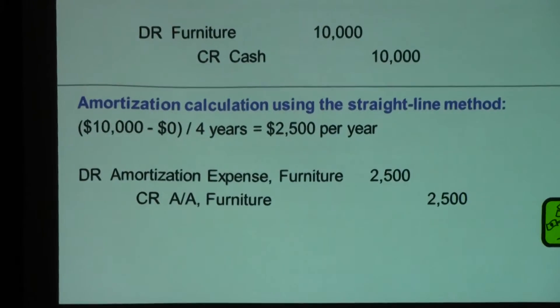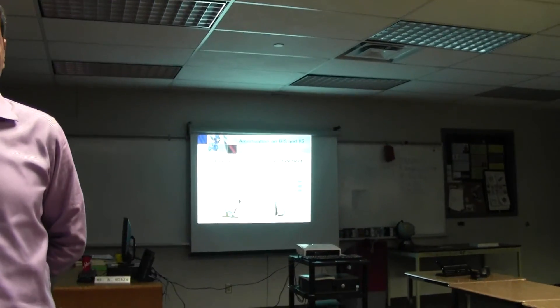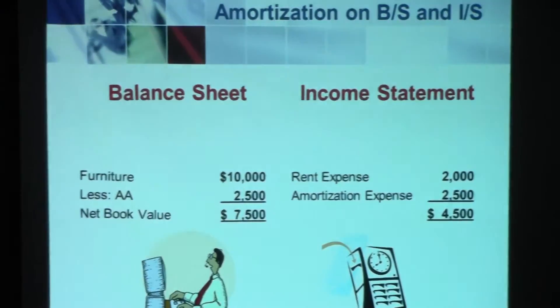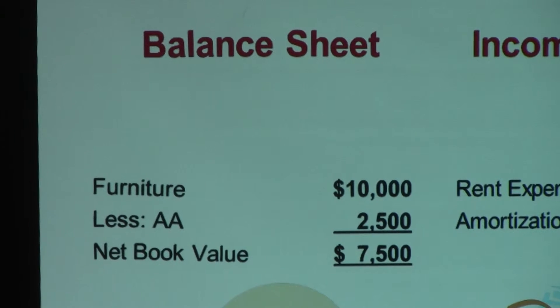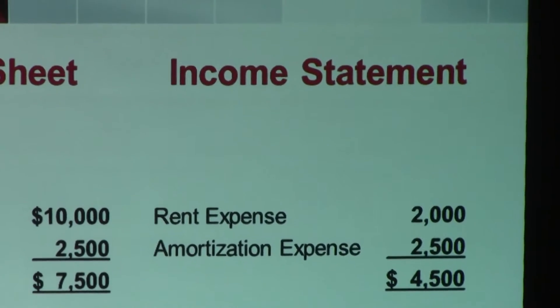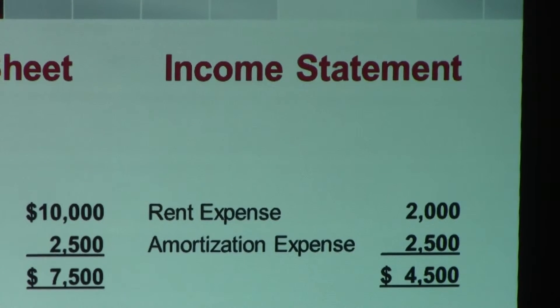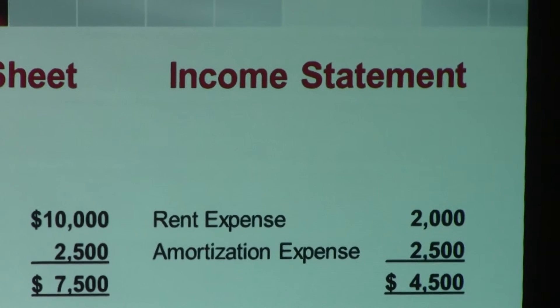The amortization adjusting entry is done at the end of the year when you are adjusting the accounts — these are not original entries, similar to supplies, prepaid expenses, unearned revenues, and late-arriving invoices. On the balance sheet, furniture minus accumulated amortization gives net book value. On the income statement, amortization expense appears alongside other expenses such as rent expense, and all expenses are totalled together.